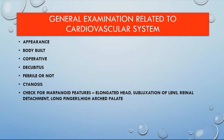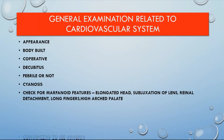Check for Marfanoid features: elongated hair, subluxation of lens, retinal detachment, long fingers, and high arched palate. We consider Marfanoid features because Marfan syndrome is associated with aortic dissection, which is an important cardiovascular complication.